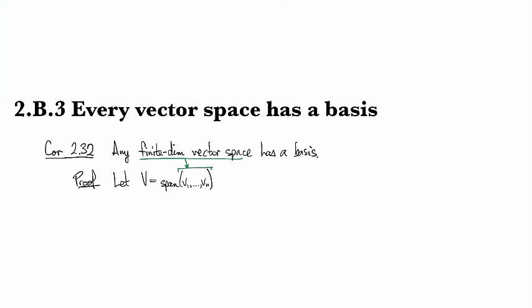So I'm just invoking the hypothesis there. I've got some spanning set, then v1 through vn contains a basis by the proposition we proved in the previous clip, which was numbered 2.3.1.